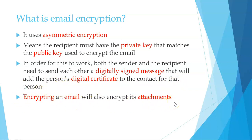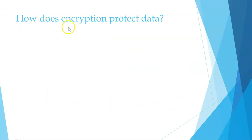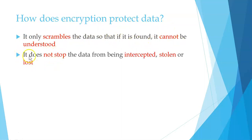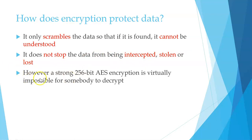How does encryption protect data? Encryption scrambles the data so that if it is found, it cannot be understood. It does not stop the data from being intercepted, stolen, or lost — it just prevents the data from being understood. However, strong 256-bit AES encryption is virtually impossible for somebody to decrypt.